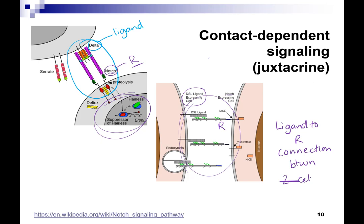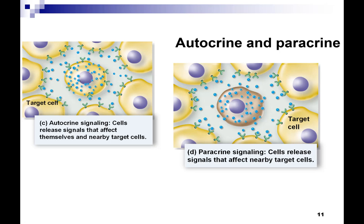A third and fourth type of signaling is autocrine and paracrine. The ending '-crine' refers to cell communication. Auto and para tell you what kind of cell-to-cell communication. Auto means self. All of these types of signaling we've been talking about — direct intracellular, contact-dependent — are local, short distance.